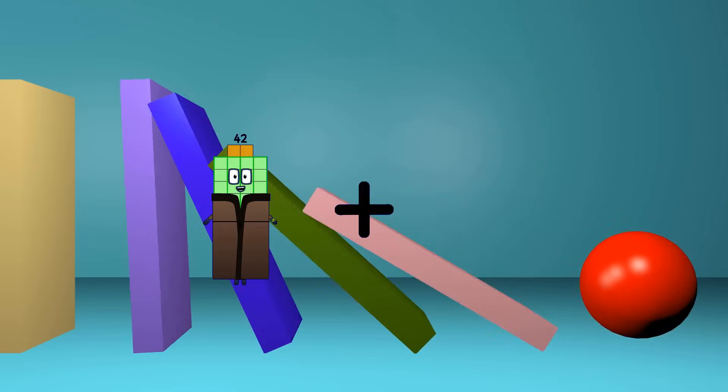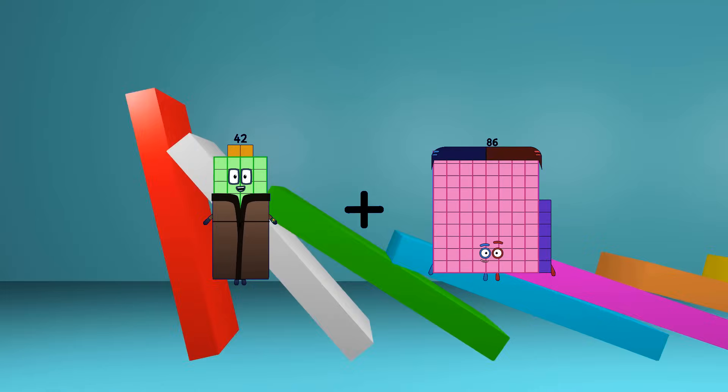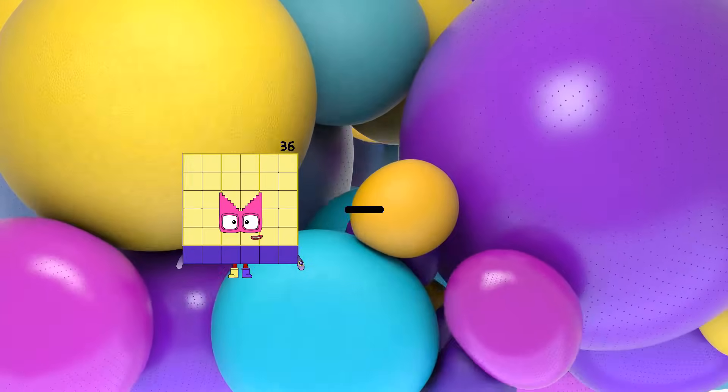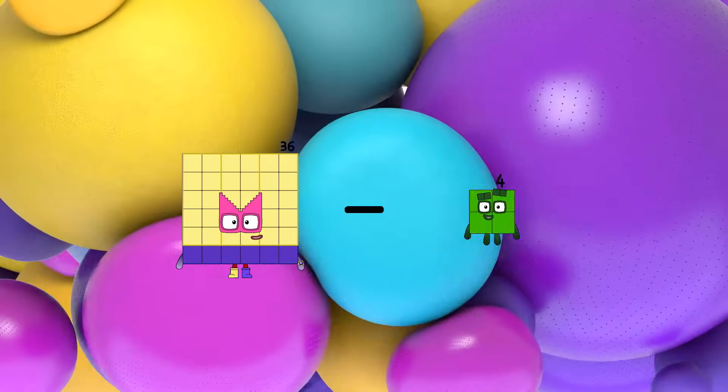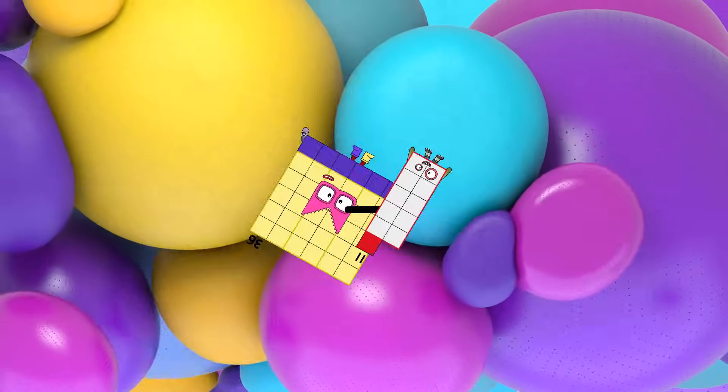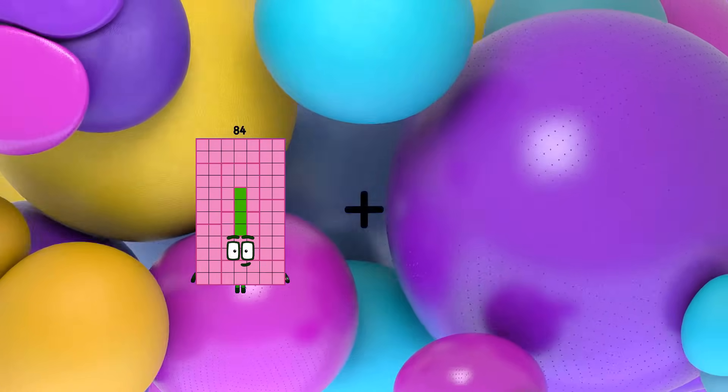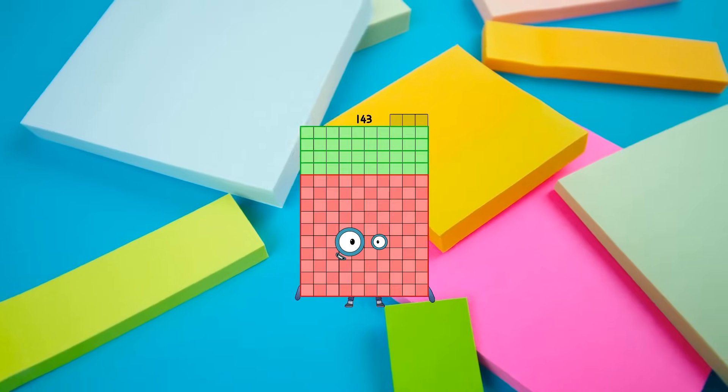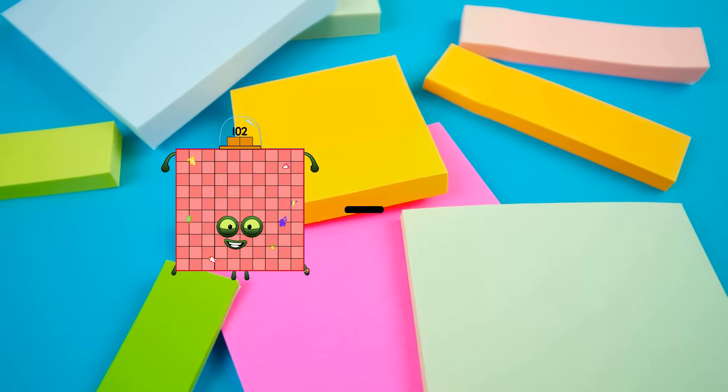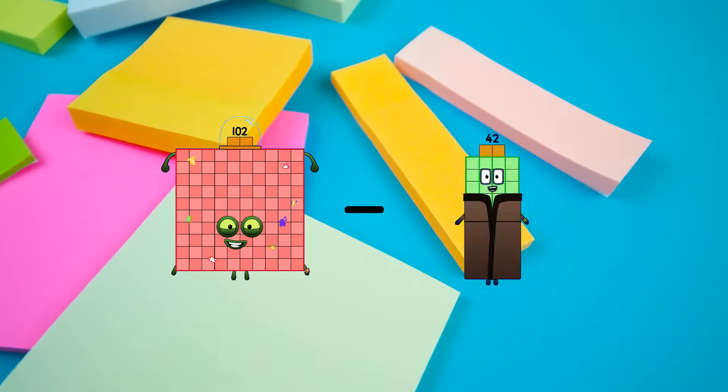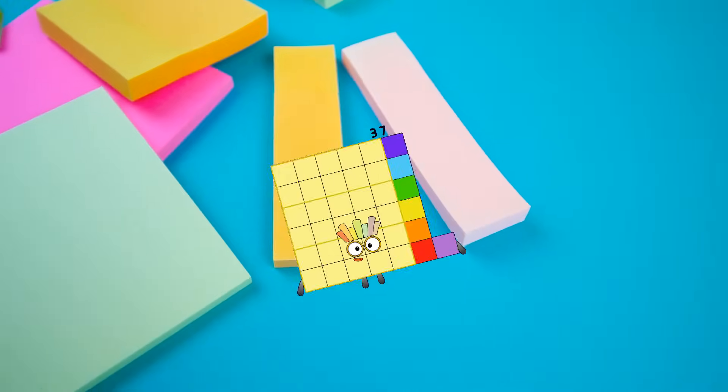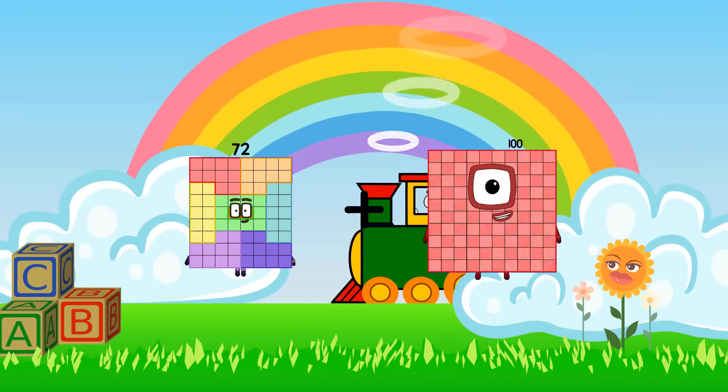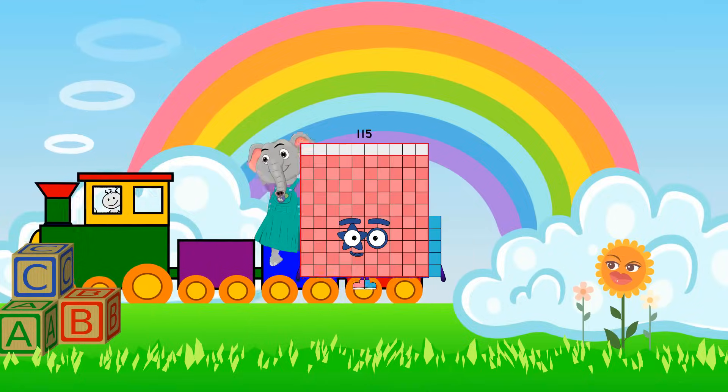42 plus 105 equals 147. 36 minus 11 equals 25. 84 plus 59 equals 143. 102 minus 65 equals 37. 72 plus 43 equals 115.